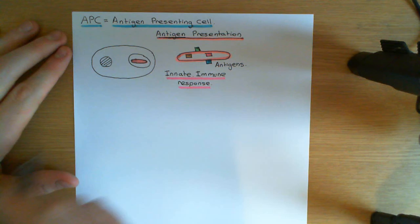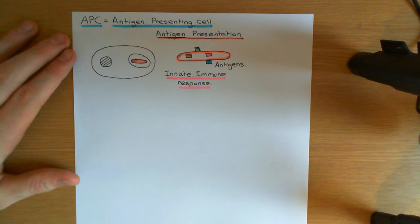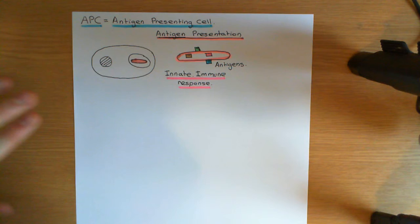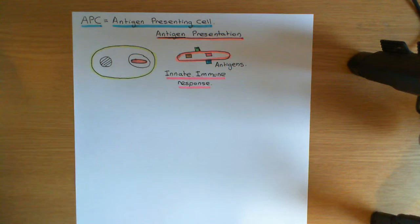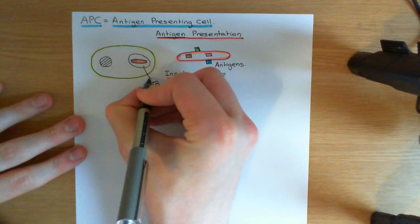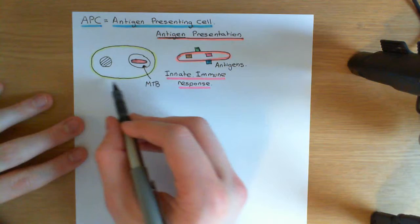In order to activate T cells directed against the antigens of mycobacterium tuberculosis, an antigen presenting cell has to process the antigens from mycobacterium tuberculosis and present them to T cells in order to activate them. The antigen presenting cell — drawn here as a macrophage, though it will more often be a dendritic cell — is breaking down the mycobacterium tuberculosis successfully, chopping up all of the different antigens into lots of little fragments.